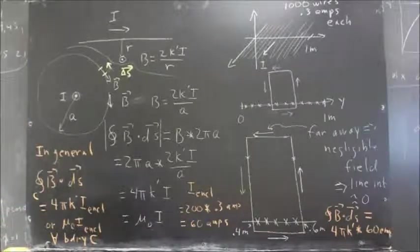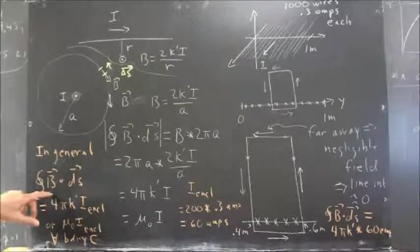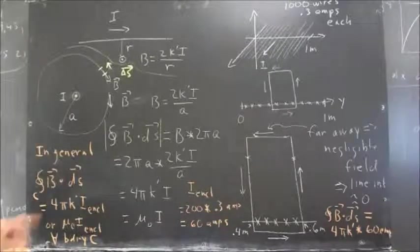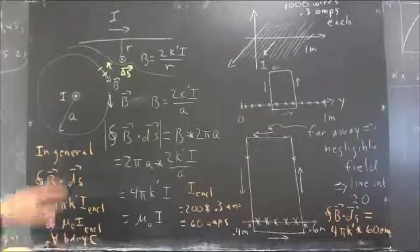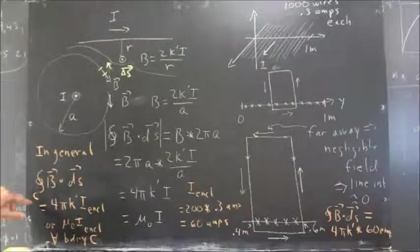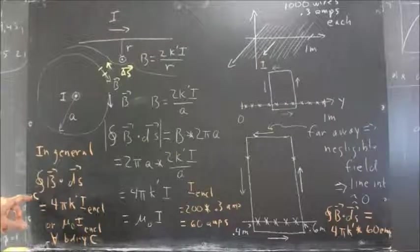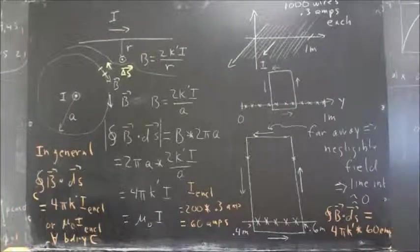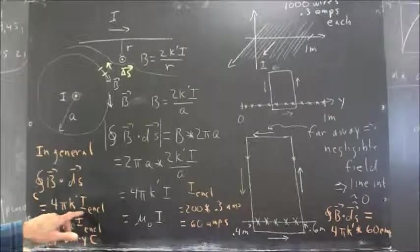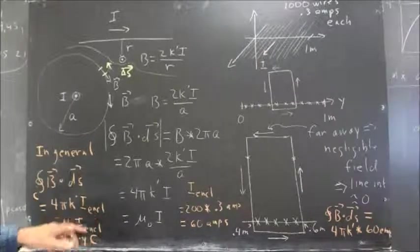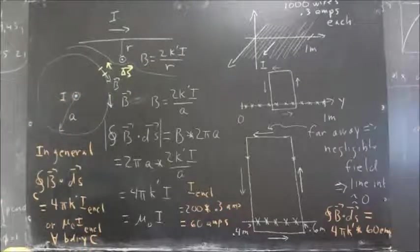Now, in general, the integral of magnetic field dot dS is 4 pi k prime times the enclosed current, the current enclosed inside the loop. C is the boundary of the loop, and I enclosed is all the current that passes through the region bounded by that boundary.